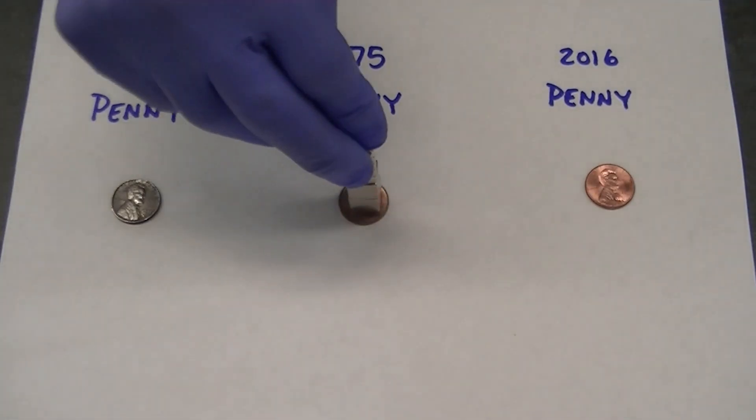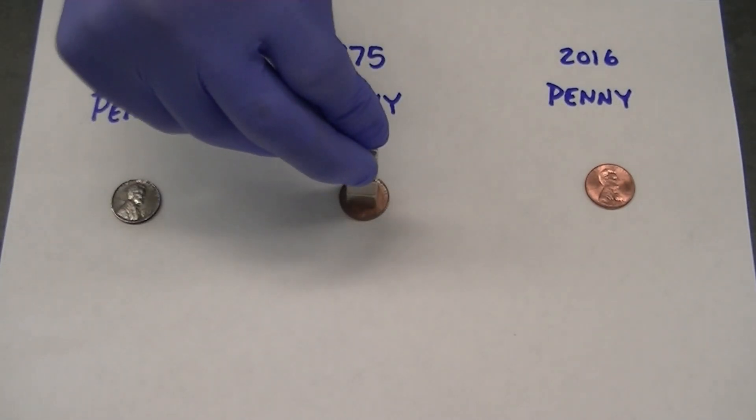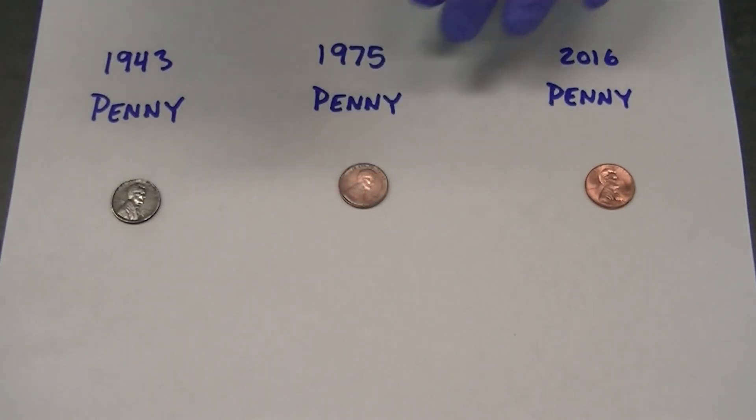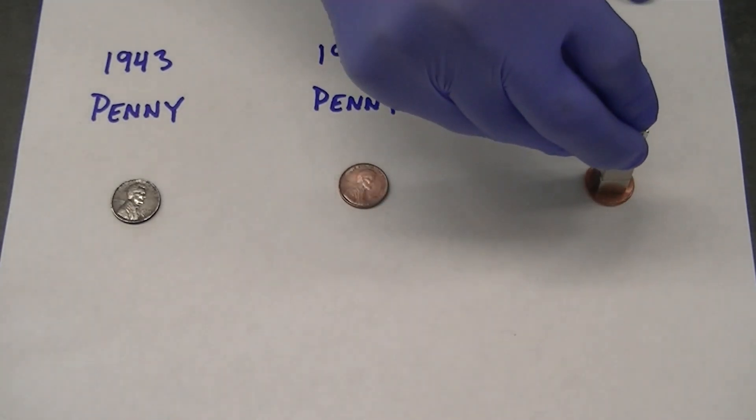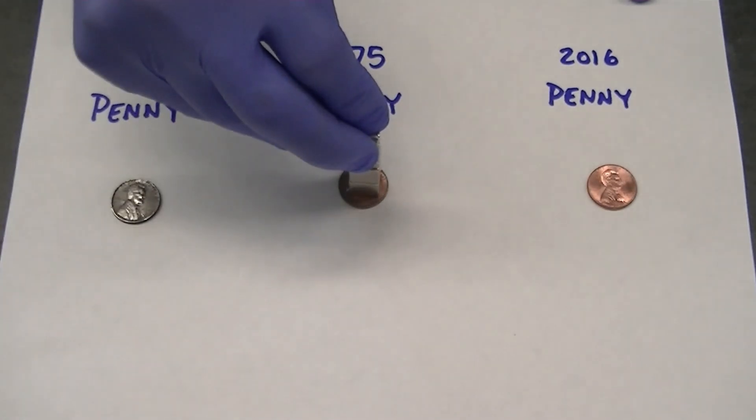However, the 1975 penny, which contains the good conductor copper, is affected by a moving magnetic field. The 2016 penny made of zinc, which is not as good of a conductor as copper, is not strongly affected by the moving magnetic field.